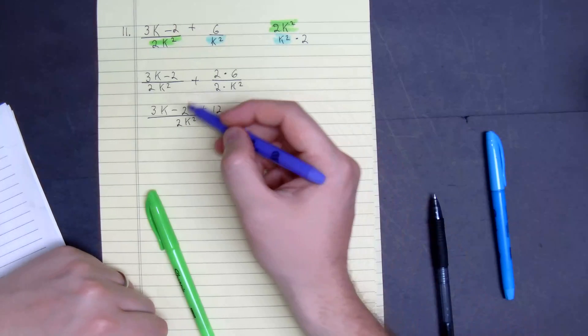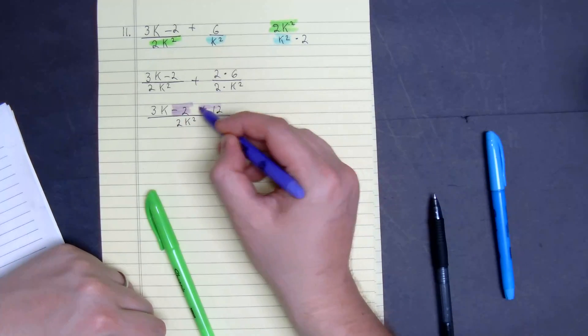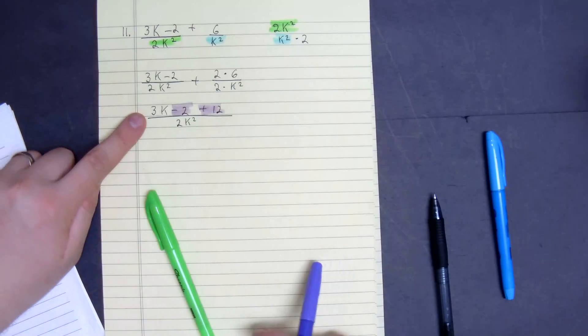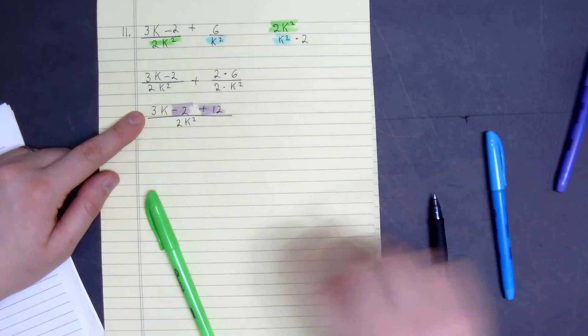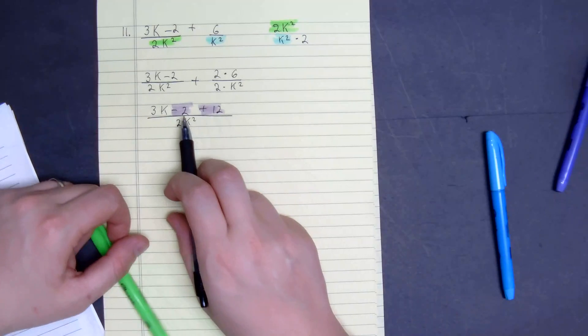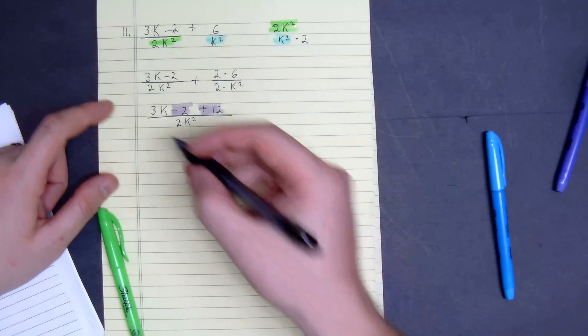Now I'm going to combine like terms. We have a negative 2 and a plus 12. And 3k is already leading for descending order. So the ending of this would be negative 2 plus 12, which is 10.